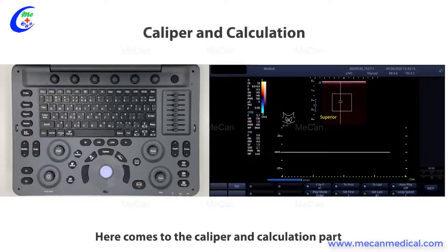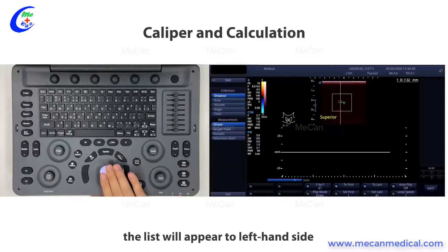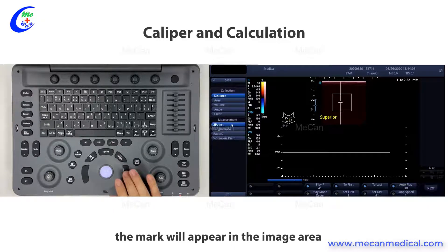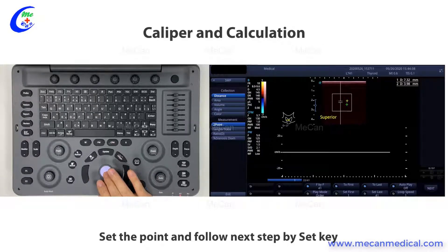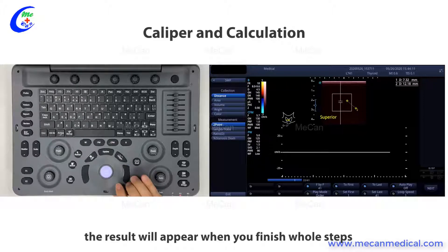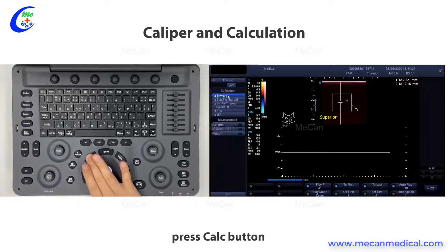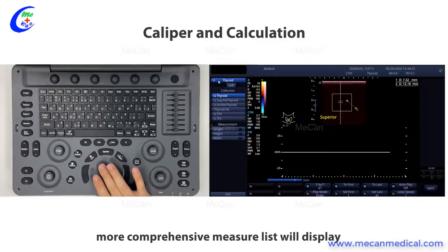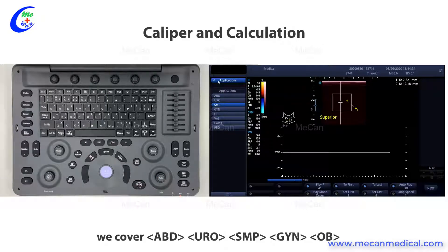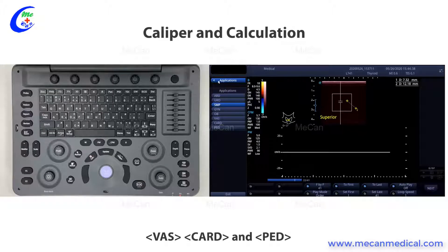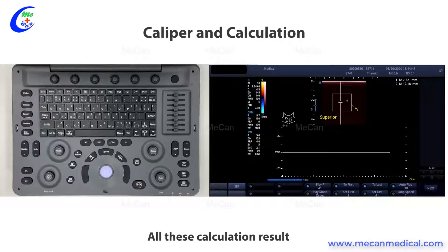Here is the caliper and calculation section. If you choose caliper to do basic measurements, the list will appear on the left-hand side. Click the measure you need, and the marker will appear in the image area. Set the point and follow each next step by pressing SET. The result will appear when you finish the whole step. For further measurement, press the calculation button — a more comprehensive measure list will display. You can choose different applications including abdominal, urology, small part, gynecology, obstetric, vascular, cardiac, and pediatric for different professional examinations. All calculation results will go to the report automatically when you finish.